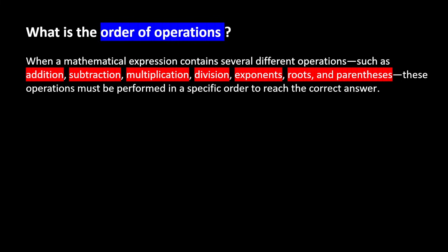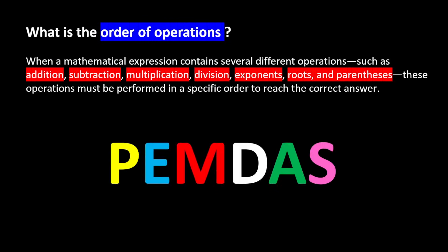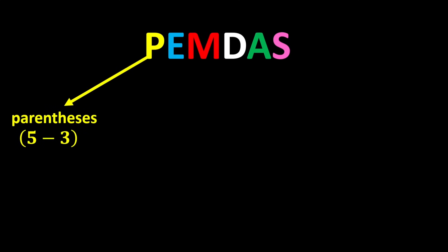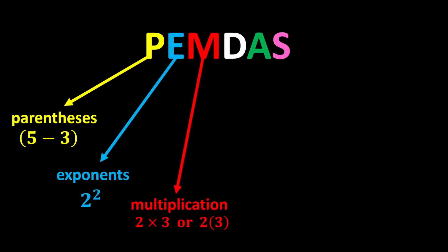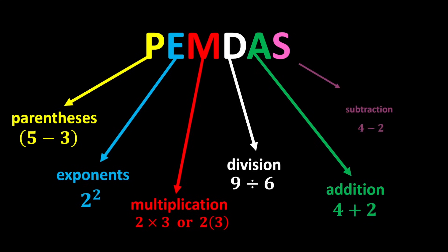The correct order of operations is known by a short abbreviated expression called PEMDAS. According to PEMDAS, we first calculate the parentheses, then we calculate the exponents, after the exponents we perform the multiplications and divisions, and finally we do the additions and subtractions.